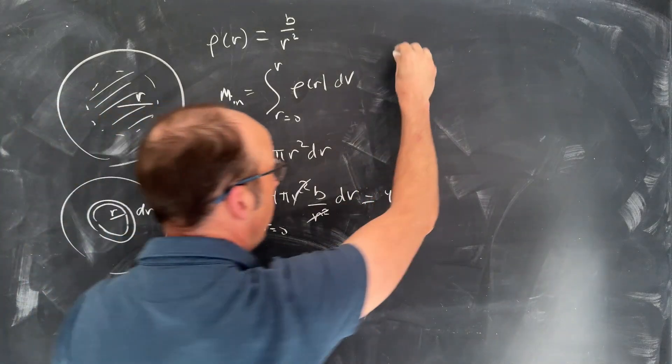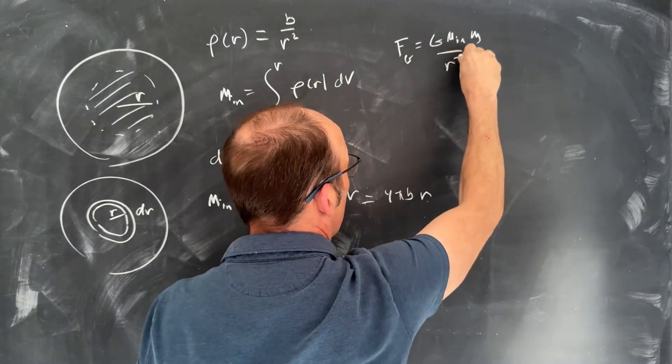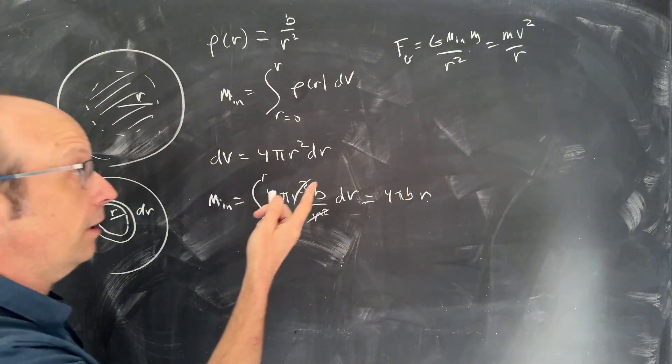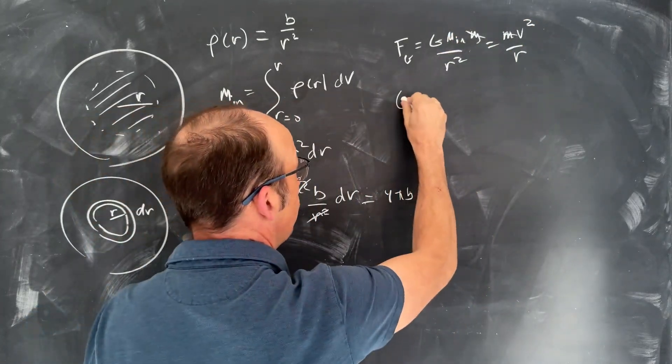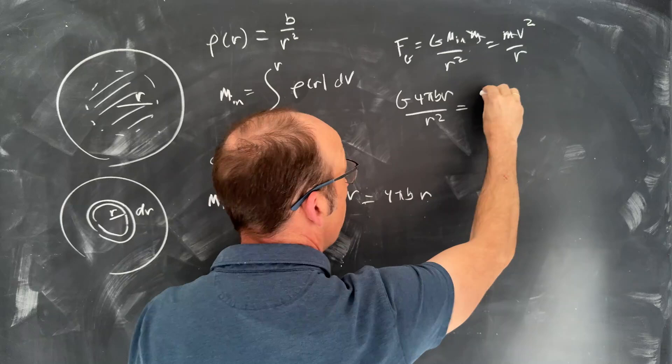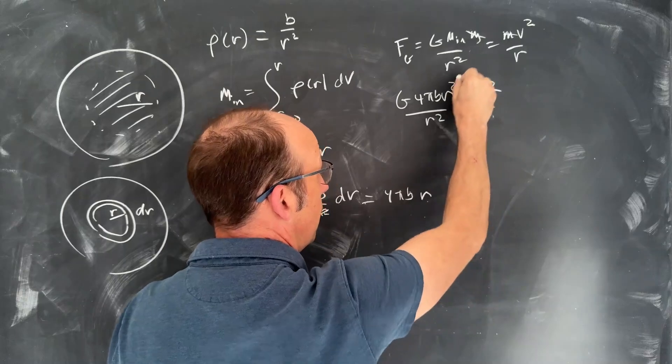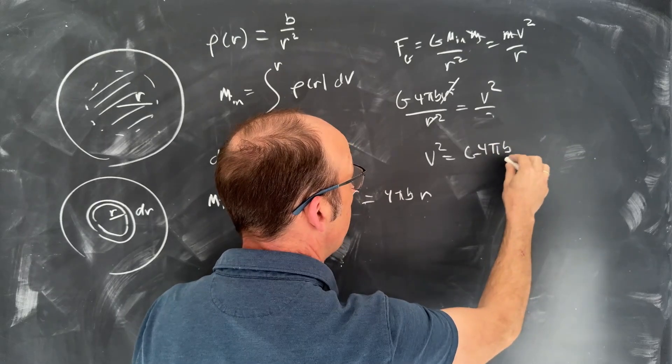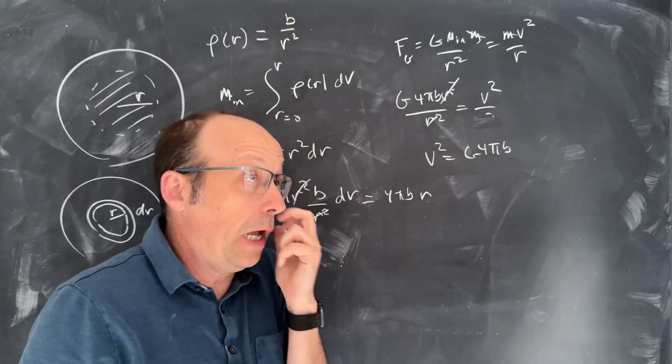Now I can go back to my gravitational force. Fg is going to be G m_in m over r² equals m v² over r. And let's see what the velocity would be in this case. So I'm going to go ahead and cancel the mass. I'm going to put in my function for m_in, which is this. I have G 4π b r over r² equals m v² over r. And you'll notice that if I multiply both sides by r, they cancel. And I get v² is G 4π b. That's it. It does not change with r. Okay. So that would work in this case.